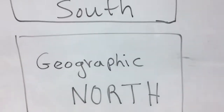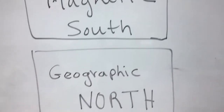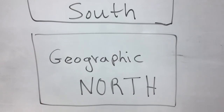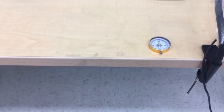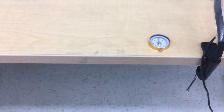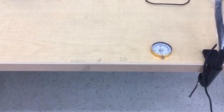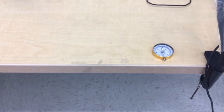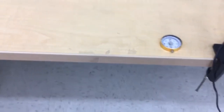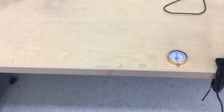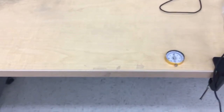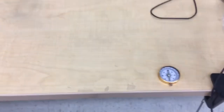So you can see that the north pole of the compass is pointing to the geographic north, which is the magnetic south pole. Now watch what happens when I bring a bar magnet close to this compass — I'm bringing the north pole of the bar magnet here.